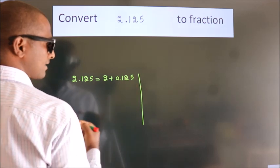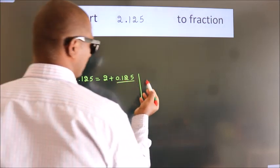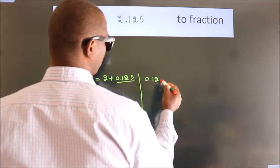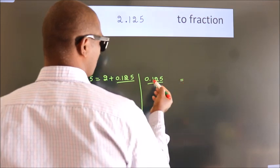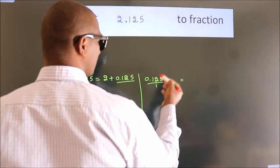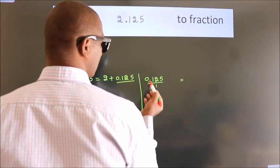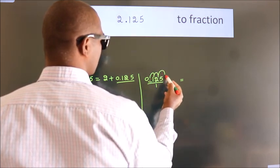Next convert this to fraction over here. So 0.125. To convert this to fraction, for that we have to move this decimal after 1, 2, 3 numbers.